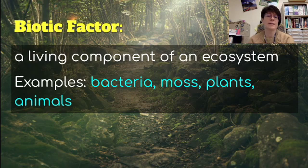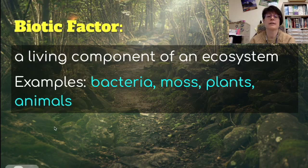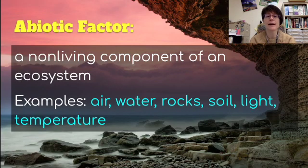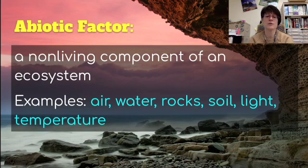In our biosphere, we have biotic factors — the living components of an ecosystem. Examples include bacteria, moss, plants, and animals. Anything that is alive is a biotic factor. There are also abiotic factors, which are the non-living components of an ecosystem. Examples include air, water, rock, soil, light, and temperature.